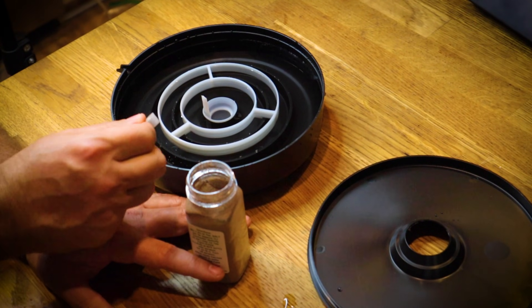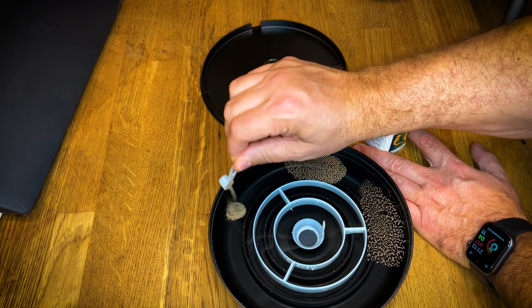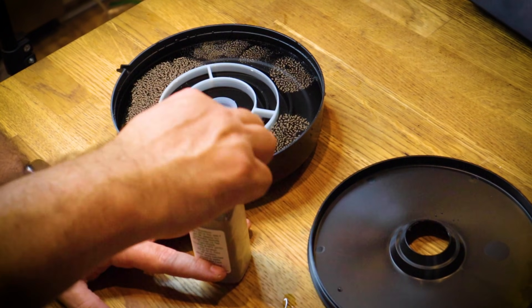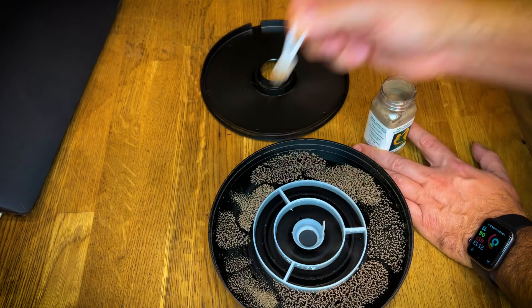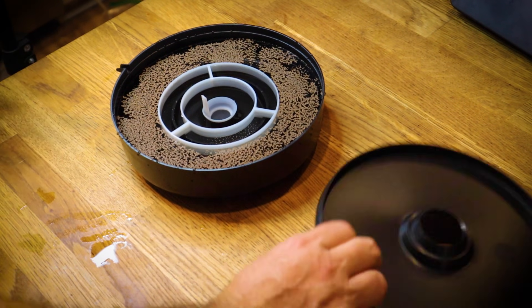Now this hatchery comes with a scoop, and you're going to use two scoops of brine shrimp eggs. This is going to produce quite a few baby brine shrimp, and I'm going to use those to feed multiple things, not just these jellyfish.